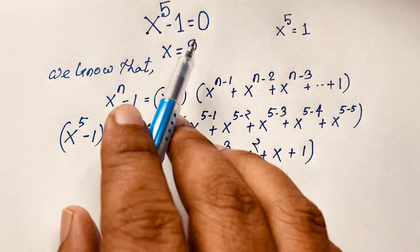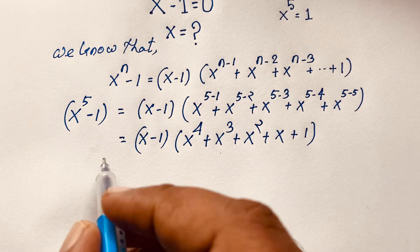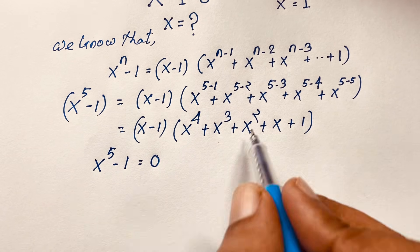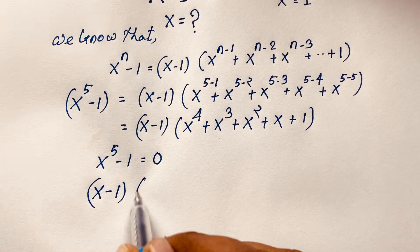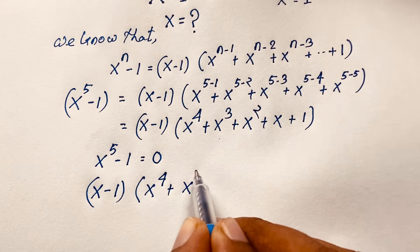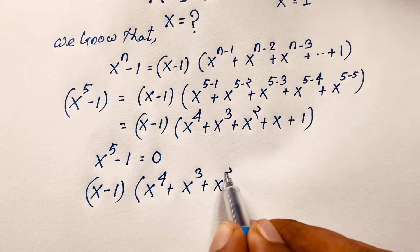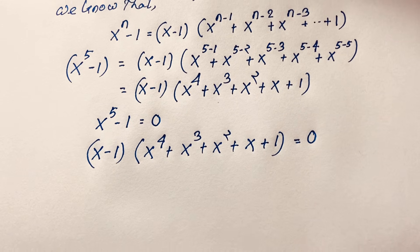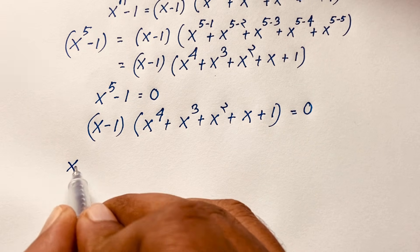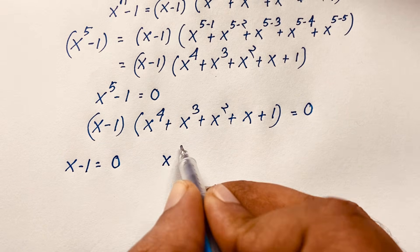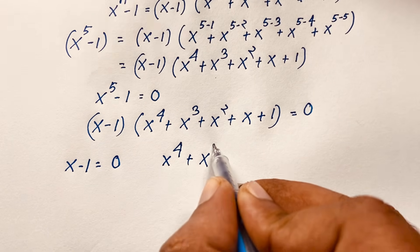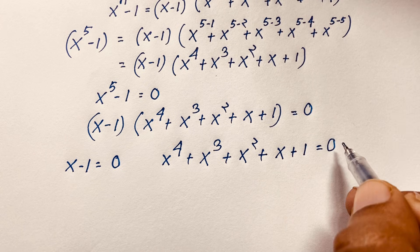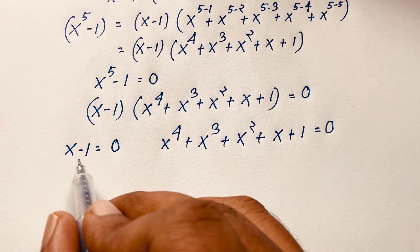We know that our equation equals 0, so it will be (x minus 1) times (x to the power 4 plus x to the power 3 plus x to the power 2 plus x plus 1) equal to 0. We'll find out two cases. Our first case is x minus 1 equal to 0, and the second is x to the power 4 plus x to the power 3 plus x to the power 2 plus x plus 1 equal to 0.